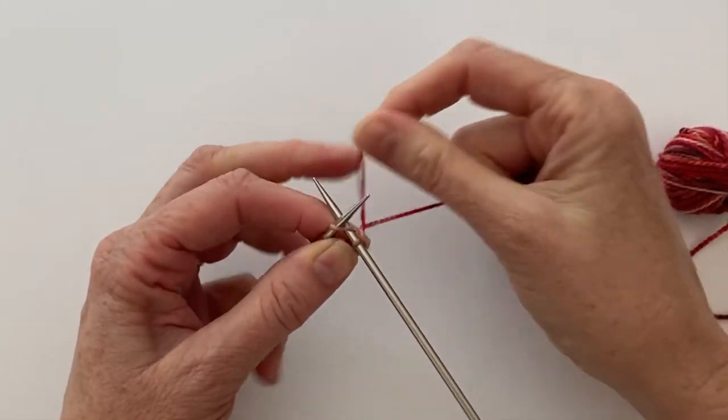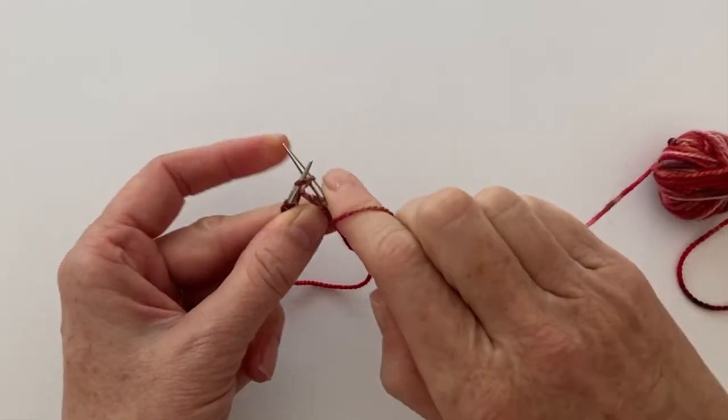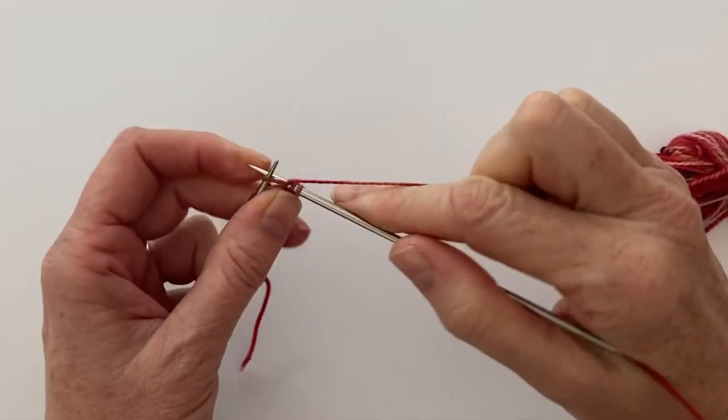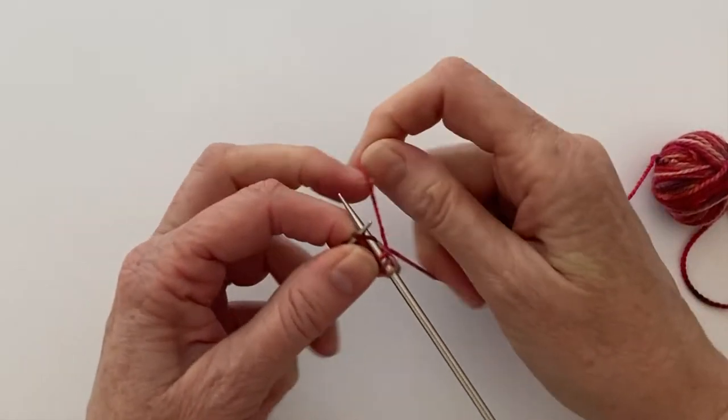As you knit the second one, wrap it again, knit your stitch. And keep doing this for a few stitches as you work into your cast on edge.